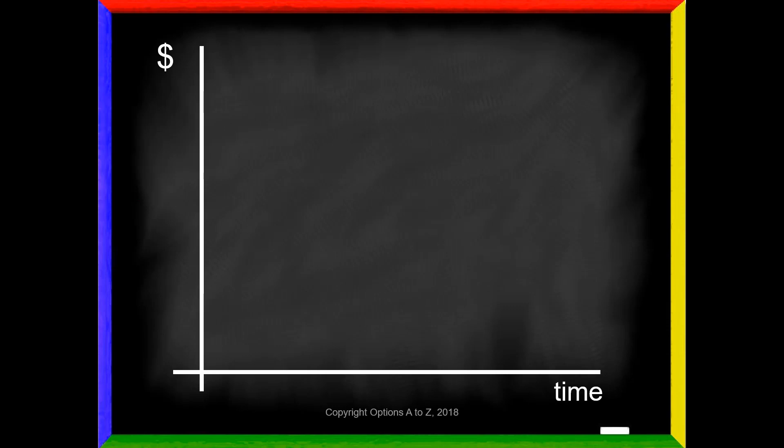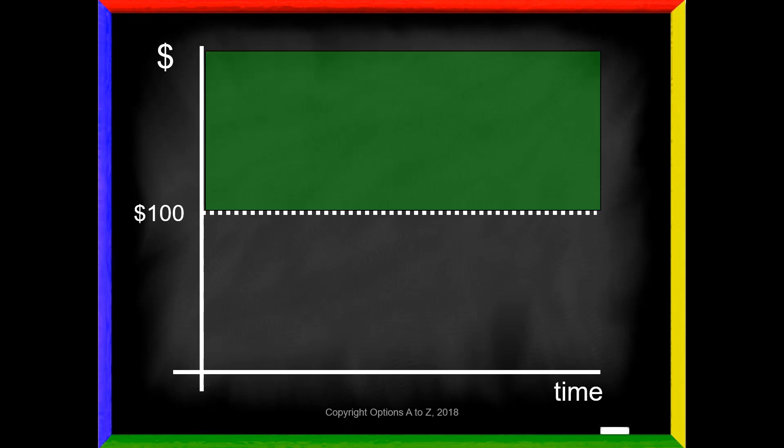To understand this better, let's take a look at it graphically. So here I've got time on the horizontal axis and price on the vertical. So let's say the stock is currently trading for $100 and you buy shares of stock. If the stock is anywhere above this $100 price, you're profitable. Doesn't matter when, and it doesn't matter by how much. You just have to be above $100. And if you're anywhere below $100, then you take a loss. And if the stock is exactly $100, you just break even.